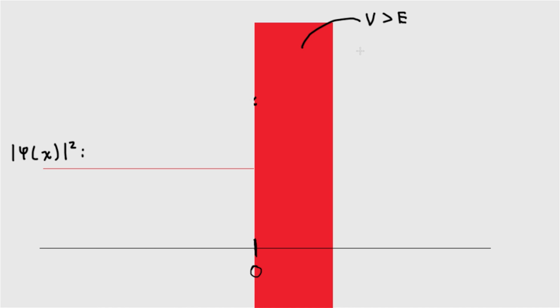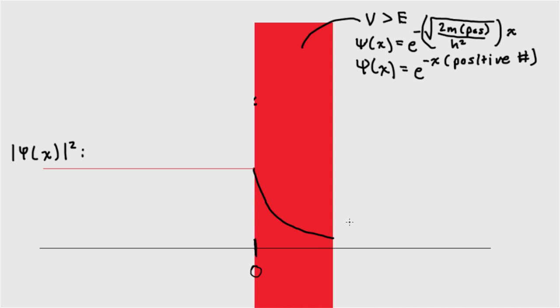Actually, no. In this case, v minus e would be positive, and we wouldn't get an imaginary number. So the wave function would be e to the minus x times some positive number. In fact, this is the exponential decay function. So it turns out that the probability of finding the particle inside the barrier drops really quickly, but it's not zero.